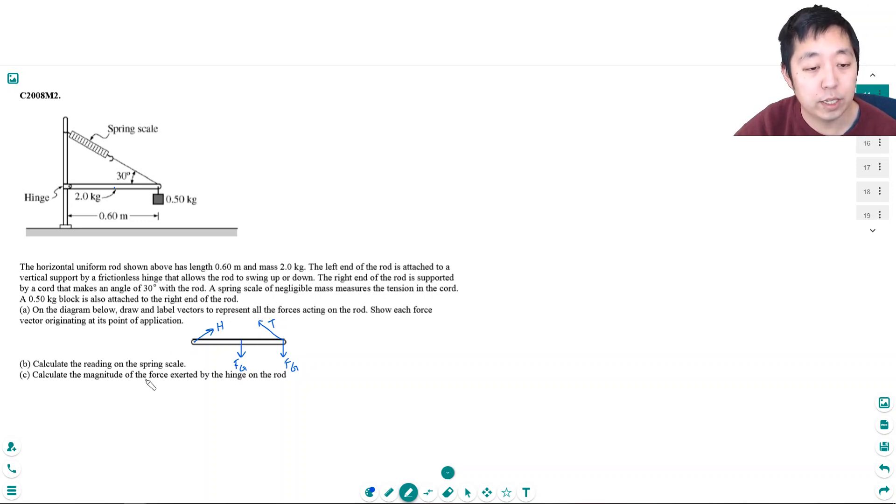Now we're going to calculate the reading on the spring scale. So you see in this problem, the thing is not rotating or it's not accelerating. This is a statics problem. And so there's two requirements that must be met. The net force is zero and the net torque is zero.